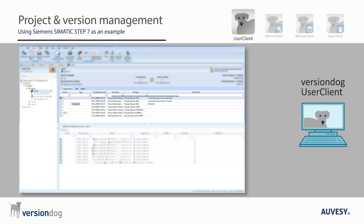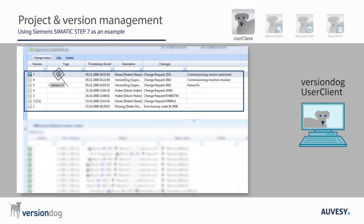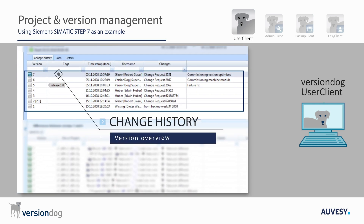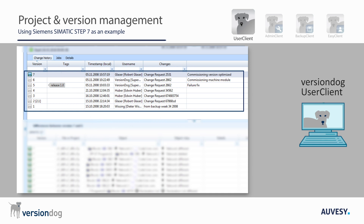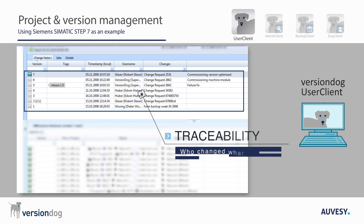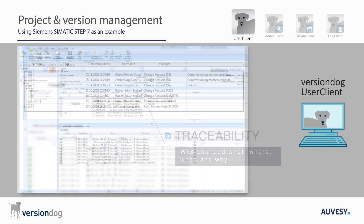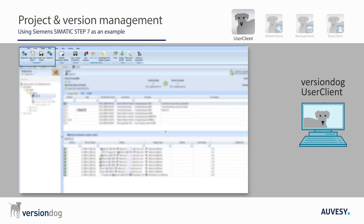Let's say we want to make a change to an S7 project in Plant One. As soon as you click on that project, all existing versions will be displayed in the change history. For each version, you can immediately see the user who checked it in, the reason for the change, and the timestamp — so you are able to see at a glance who changed what, where, when, and why.